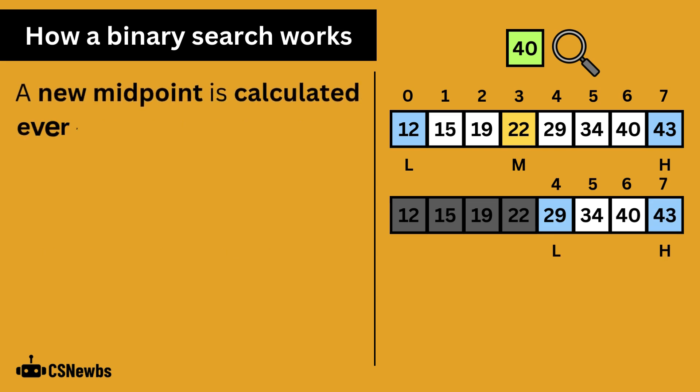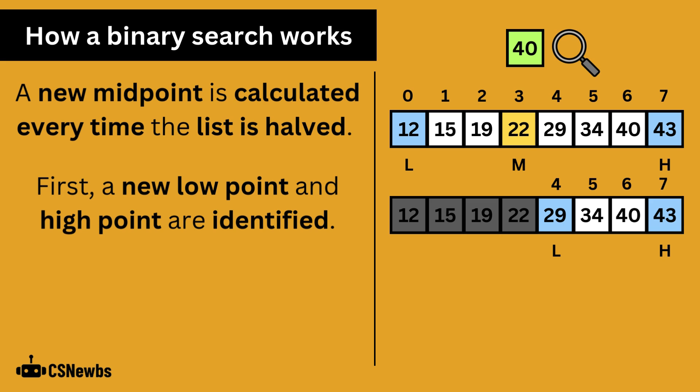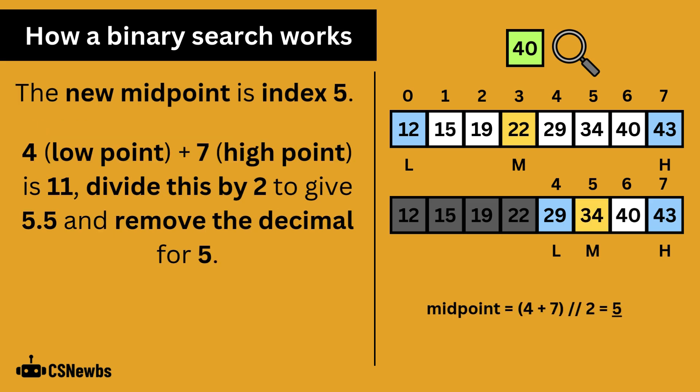A new midpoint is calculated every time the list is halved. First the new low point and high point are identified. The new midpoint is in index 5. That's because the low point, 4, is added to the high point, 7, to make 11. 11 divided by 2 is 5.5 and with integer division, the decimal is removed for just 5.